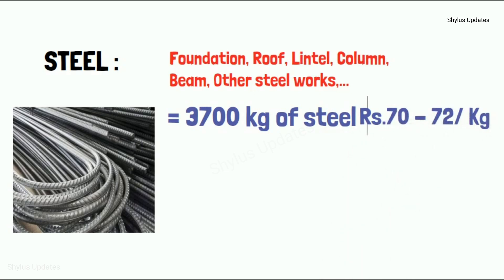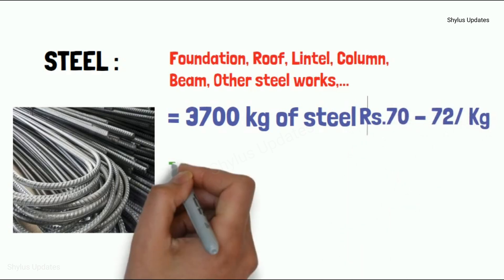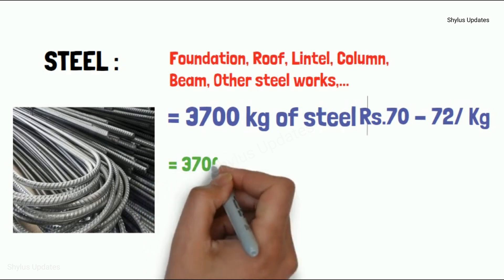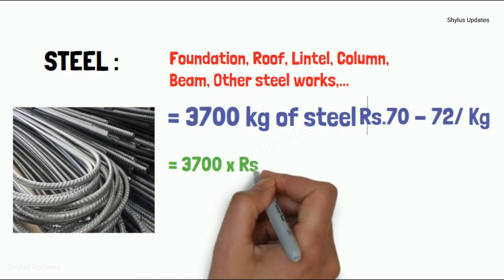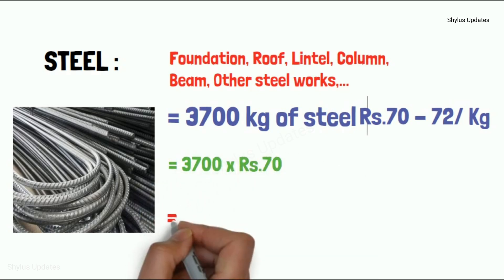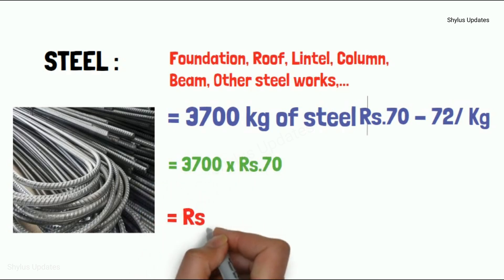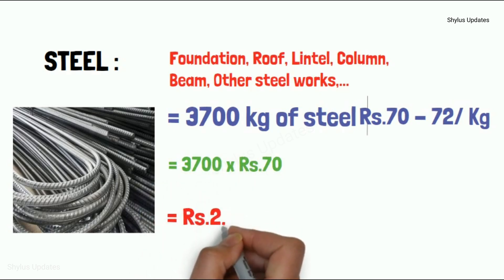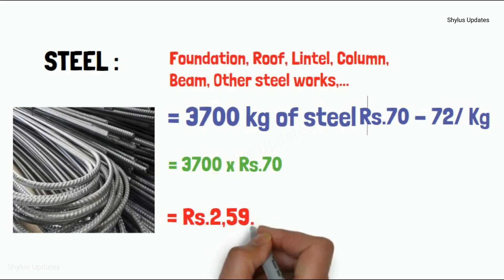So when you multiply 3,700 into Rs. 70, you get Rs. 2,59,000.